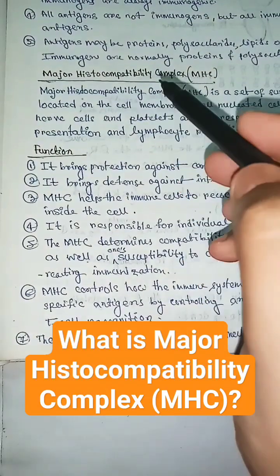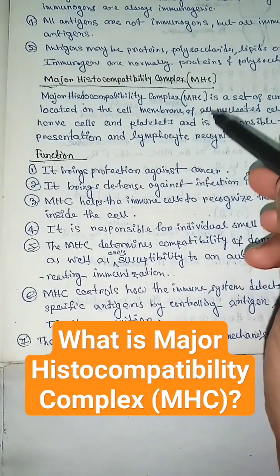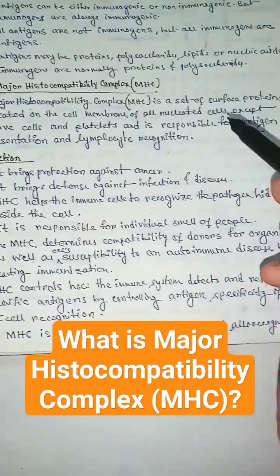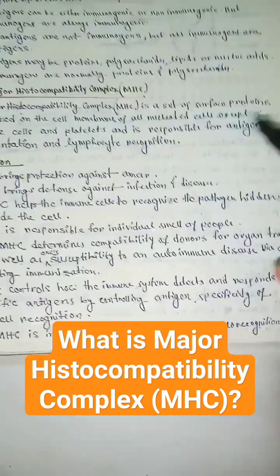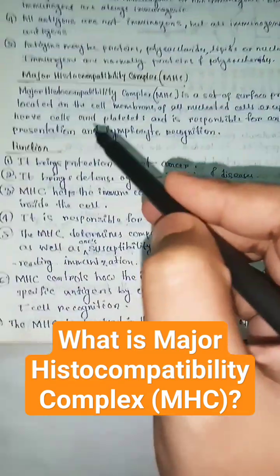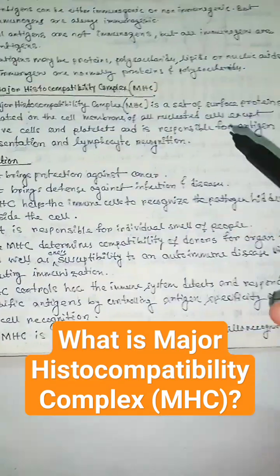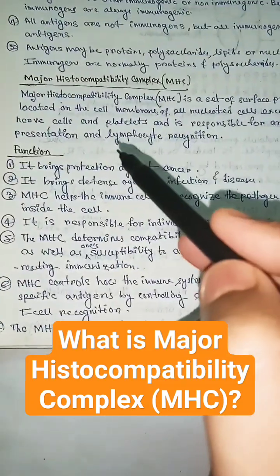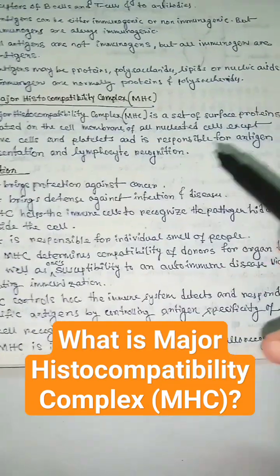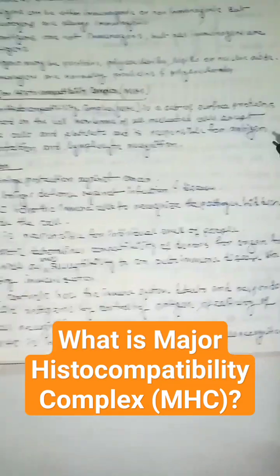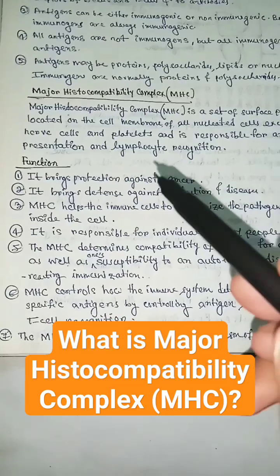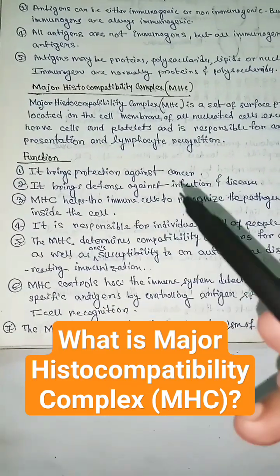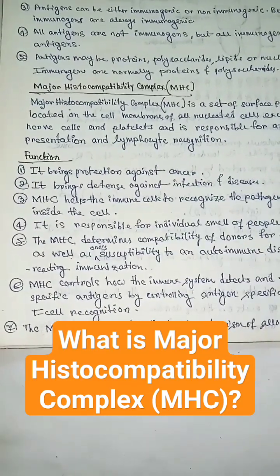What is major histocompatibility complex? Major histocompatibility complex is a set of surface proteins located on the cell membrane of all nucleated cells except nerve cells and platelets, and is responsible for antigen presentation and lymphocyte recognition. It brings protection against cancer.